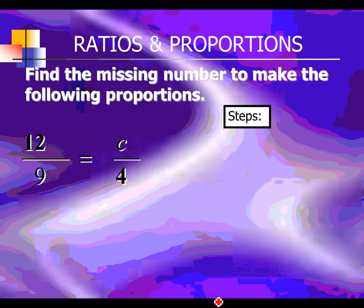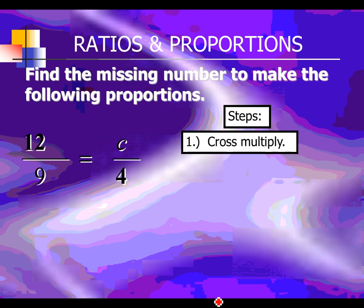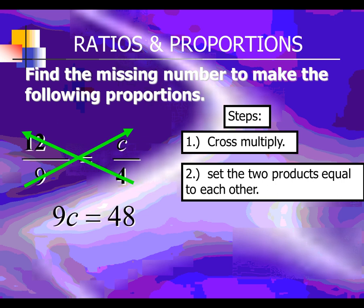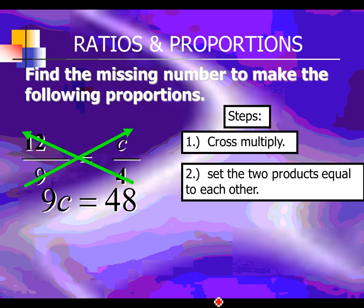Here's our next example. Cross multiply, set the equal sign in the middle, and then solve for the letter C. 9 times C is 9C. 12 times 4 is 48. Clean it up — 9C equals 48.